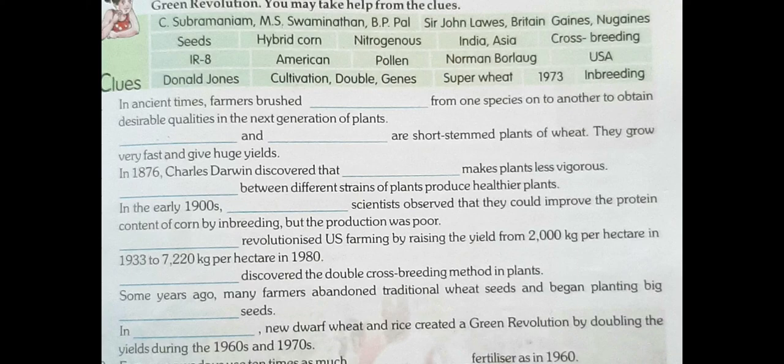Then come to question number 17. The Indian Council for Agricultural Research was reorganized in 1965 and then again in 1973. The Indian Council for Agricultural Research developed new strains of high-yield variety seeds, mainly of wheat and rice and also of millet and corn.